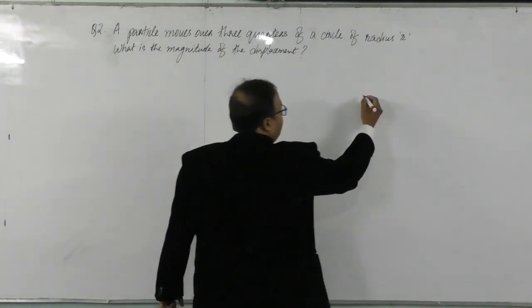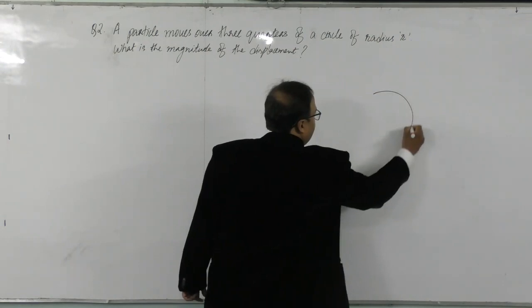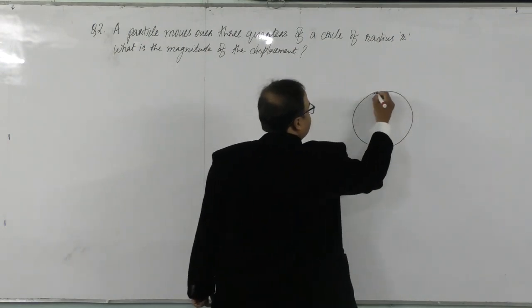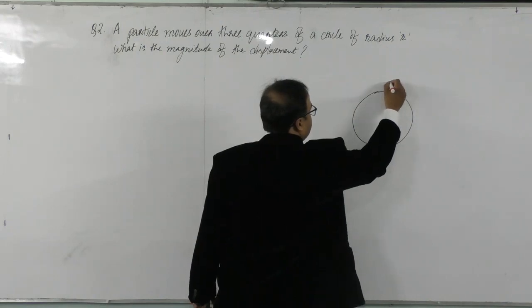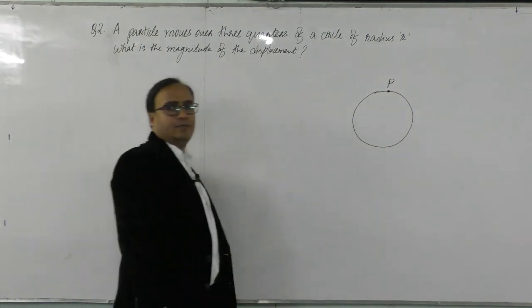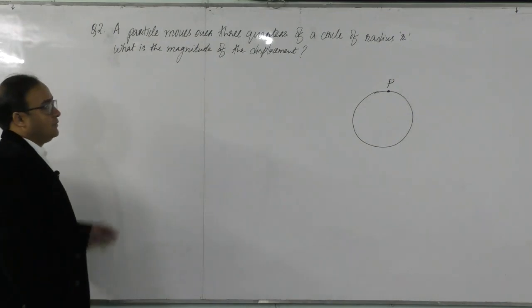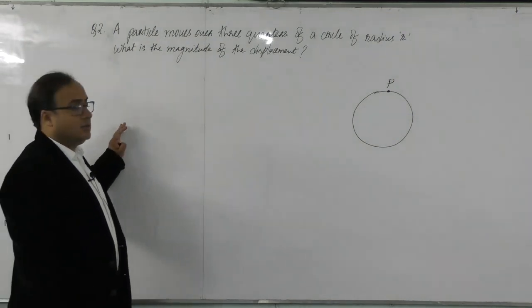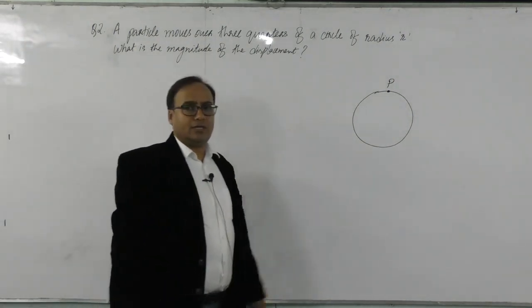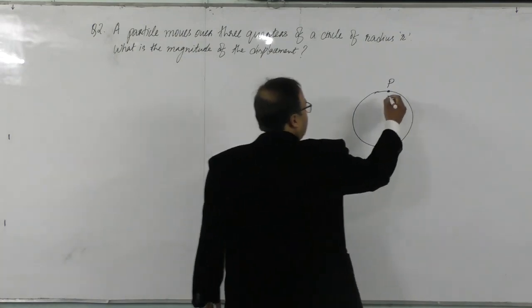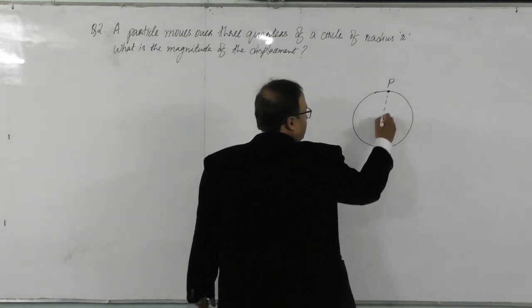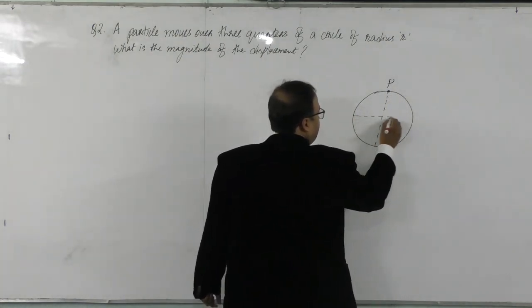So I am considering this is a circular path and a particle, suppose this particle starts from position P. Question me given hai ye particle, a circle ka 3 quarters cover karega. So it is moving in the circular path and a circle ko 4 quarters me divide karega for convenience.